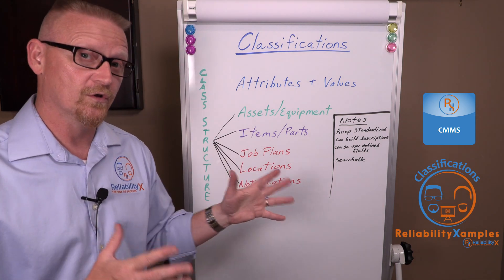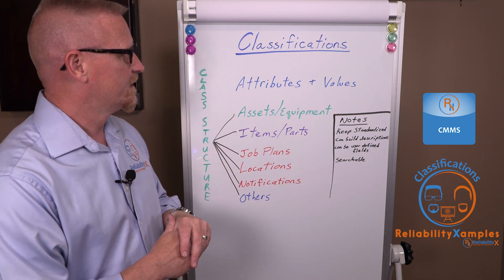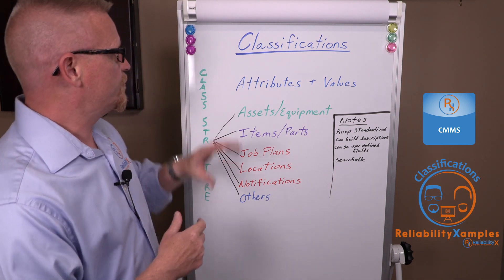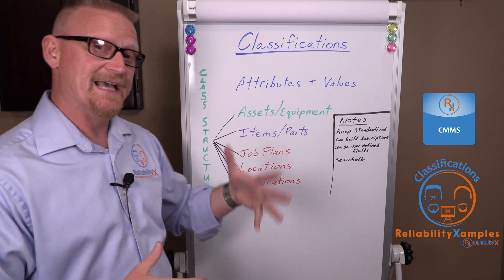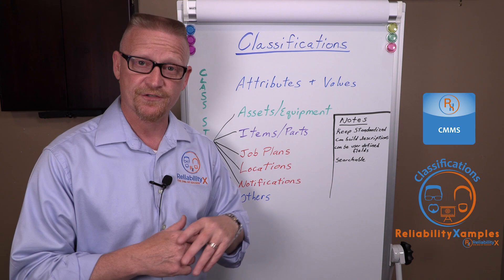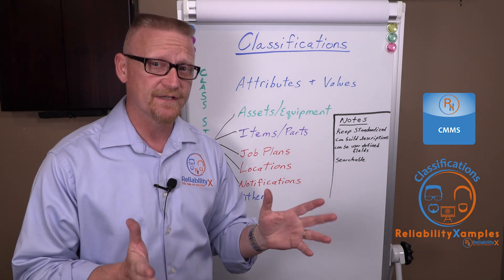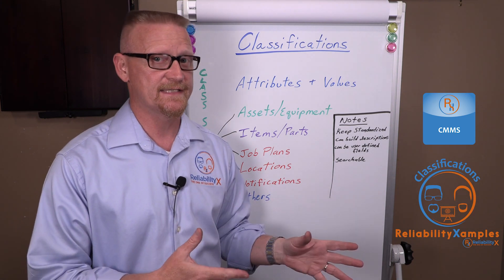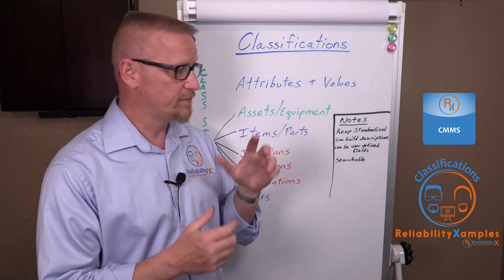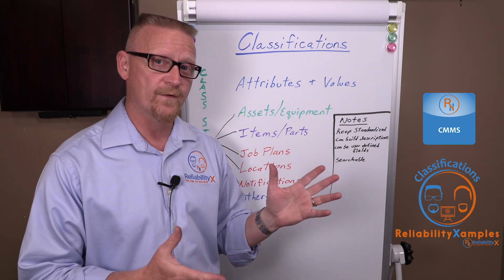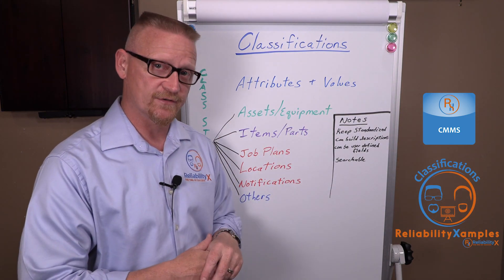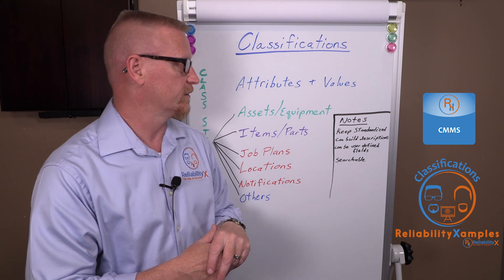A couple of things to remember: when you create your classification database, that should be standardized. There shouldn't be 50 different ways to say that this is an AC motor. When you build your class structure, have one way to say it's an AC induction motor and apply it to all your AC motors.